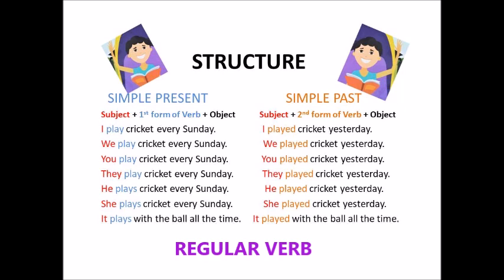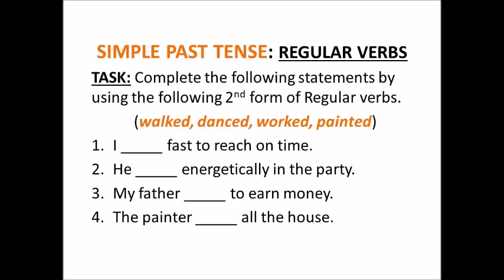In present tense: I, we, you, they play; he, she, it plays. In past tense, instead: I, we, you, they, he, she, and it — all use played. Your second task is about the usage of regular verbs. Complete the following statements using the second form of regular verbs: walked, danced, worked, and painted.